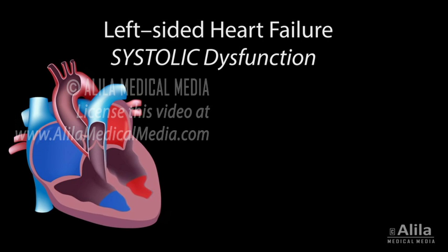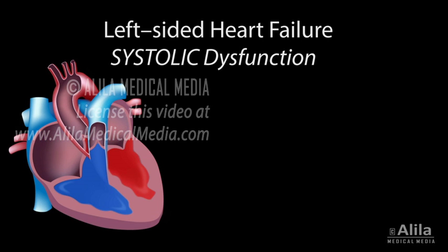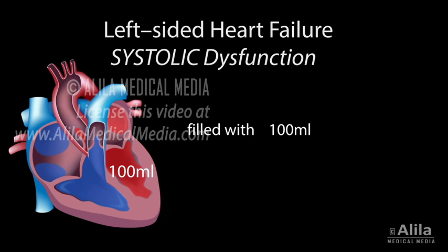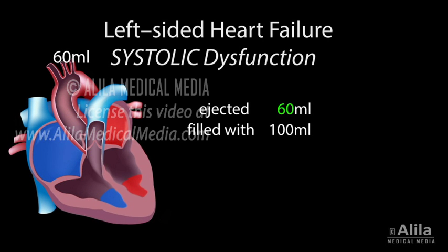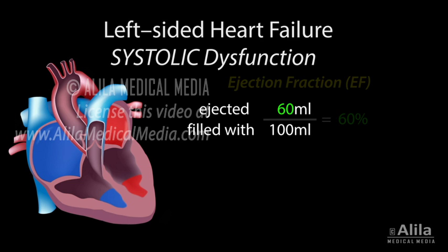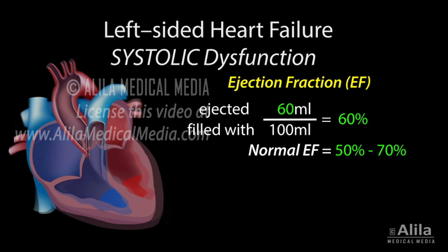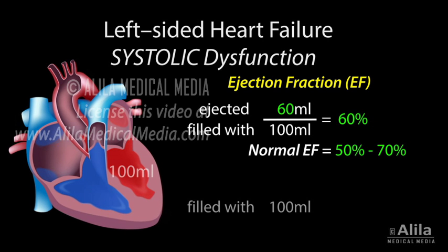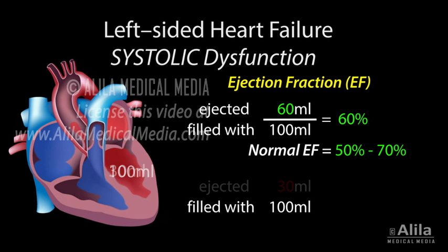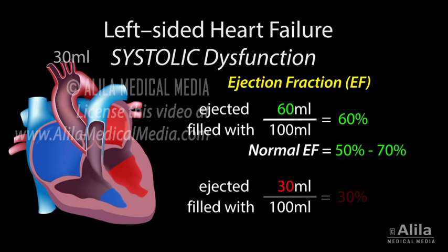The effectiveness of ventricular contraction is measured by the ejection fraction. Typically, the left ventricle is filled with about 100 milliliters of blood, but only 60 milliliters is ejected during contraction. This corresponds to an ejection fraction of 60%. The normal range of the ejection fraction is between 50 and 70%. When ventricular contraction is impaired, the volume of ejected blood is reduced, and so is the value of the ejection fraction.